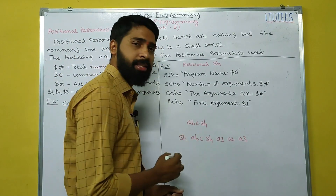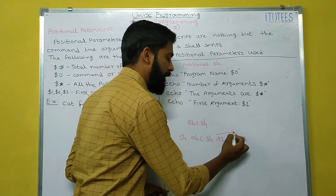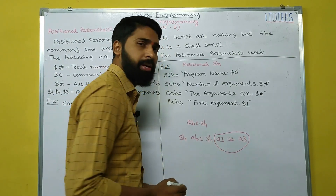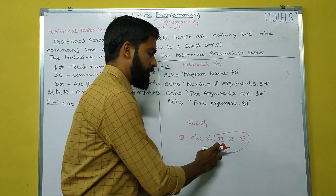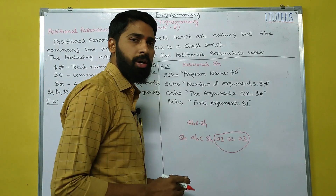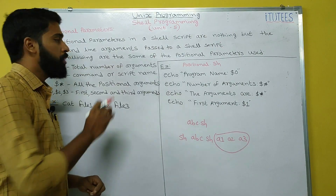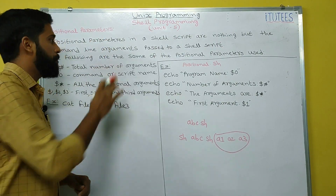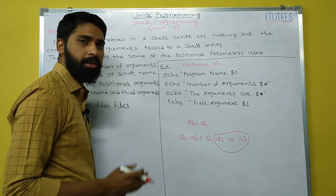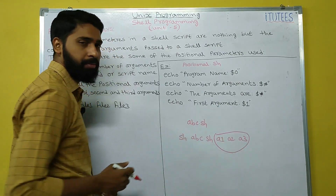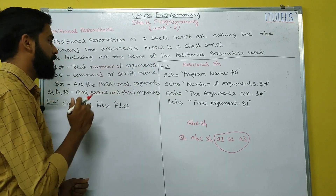So: sh abc.sh a1 a2 a3. What it means? The a1, a2, a3 are the arguments passed to this abc.sh script. These a1, a2, a3 are called command line arguments. So what are positional parameters? Positional parameters are nothing but the command line arguments passed to this program. The following are some of the positional parameters used.